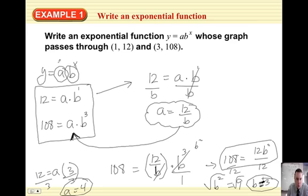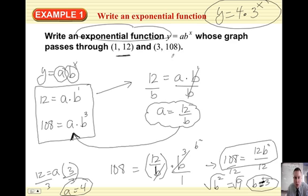So A is 4. Put it in there. Final answer. Y equals A, which we found is 4 times B to the X. So B we found to be 3 to the power of X. This is how you find an exponential function given two coordinates. Okay? So make sure you understand how to get that by hand. There you go.